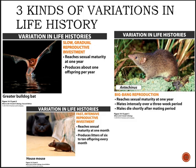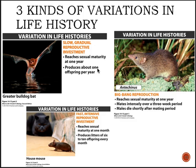Which of these life history variations do humans exhibit — fast intensive, big bang, or slow gradual? Humans are clearly slow gradual. We reach sexual maturity between ages 12 and 17, produce generally one offspring at a time, have a really good probability of surviving and reproducing again, and we live a very long time. That fits most closely with the slow gradual reproductive investment pattern, like the bat.